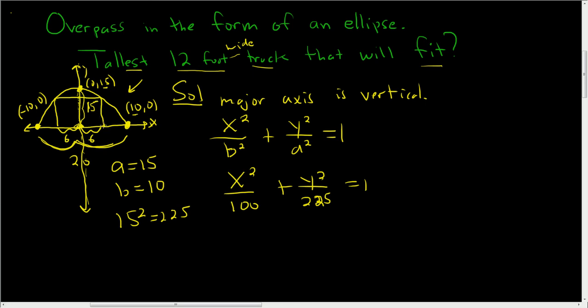Okay. So here, that means x is 6. So all we'll do is plug in 6 here and then solve for y. That should give us the tallest possible truck that will fit through the overpass.